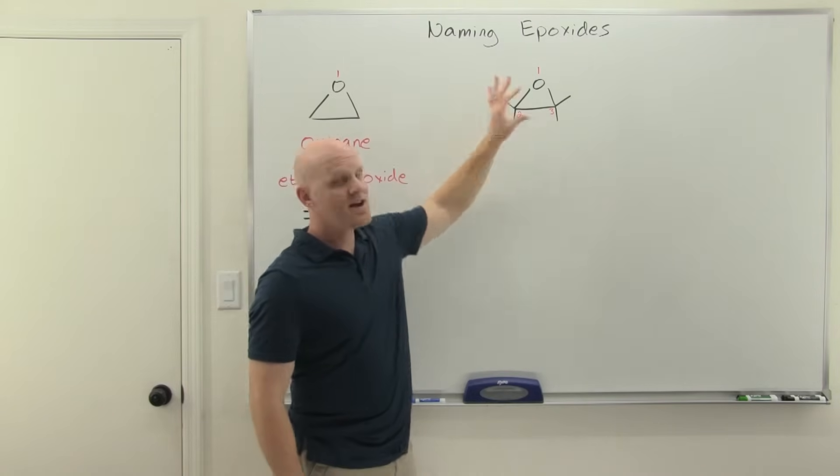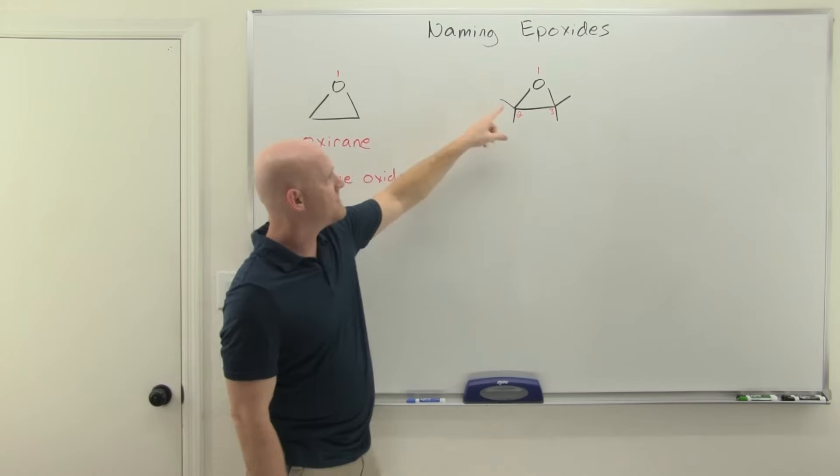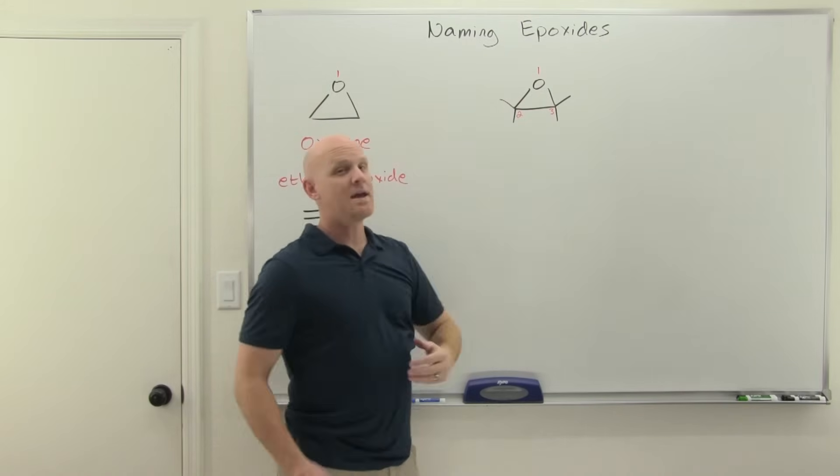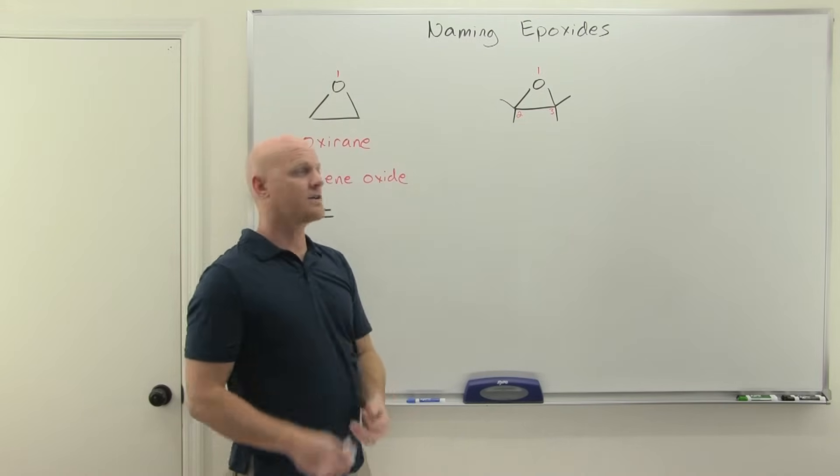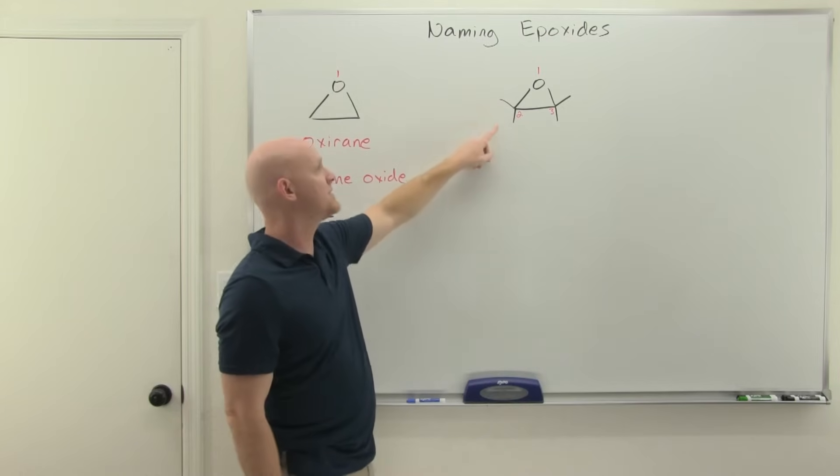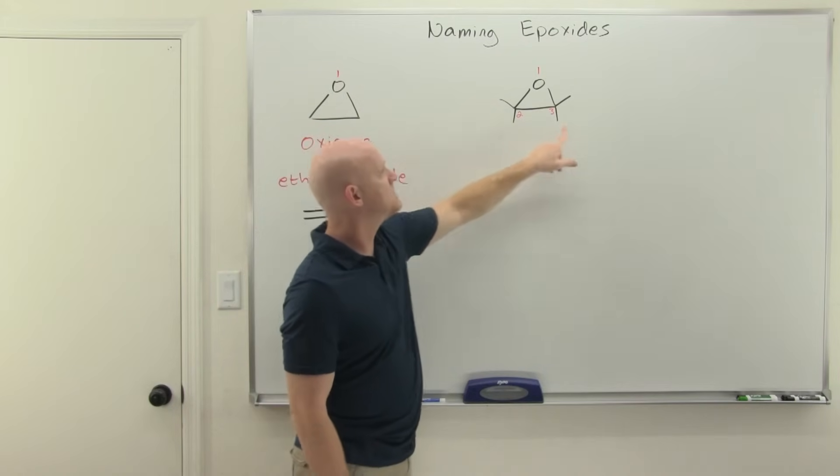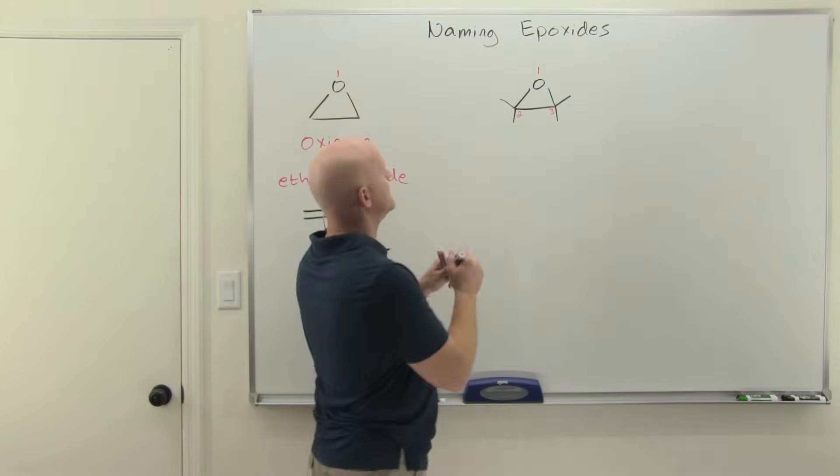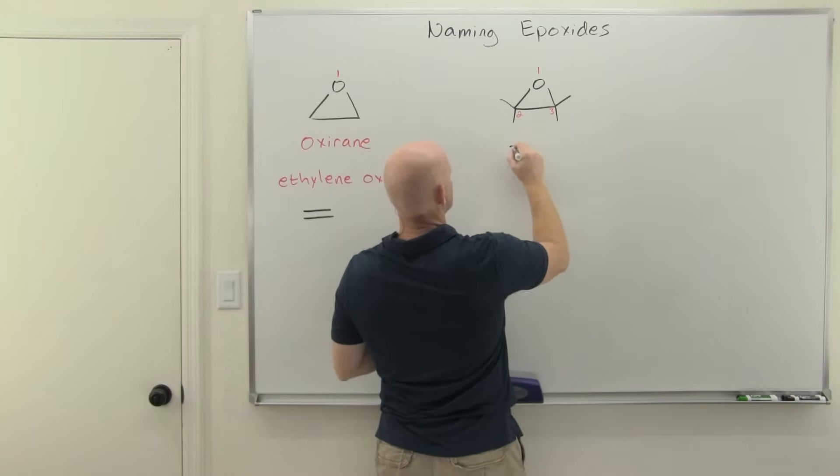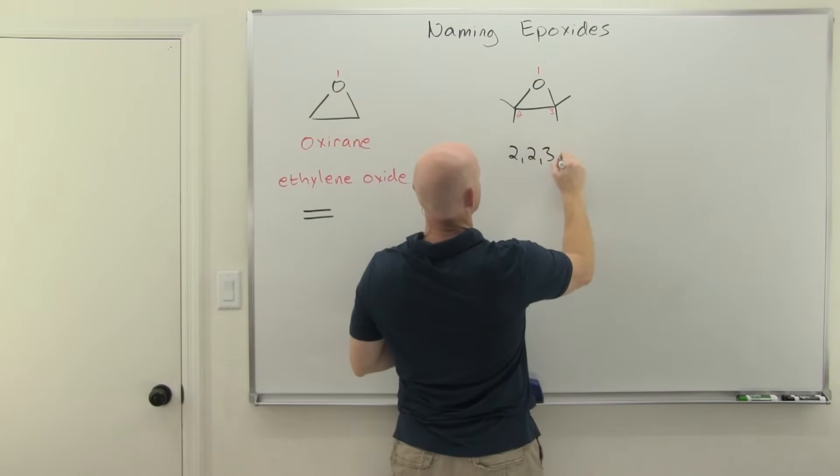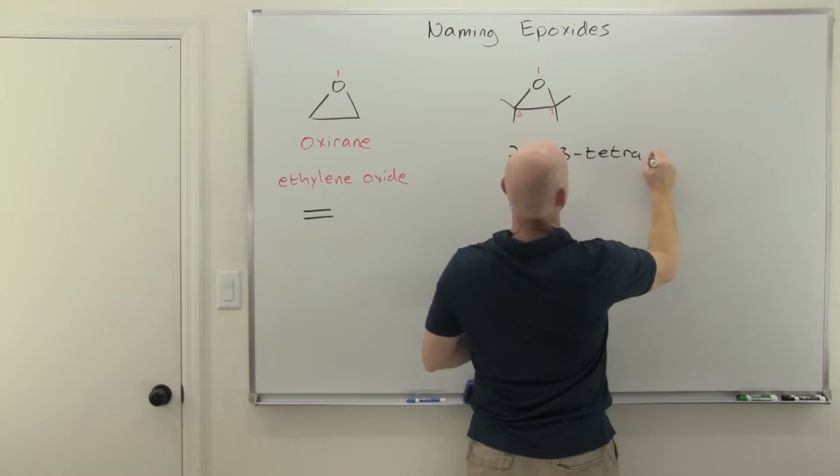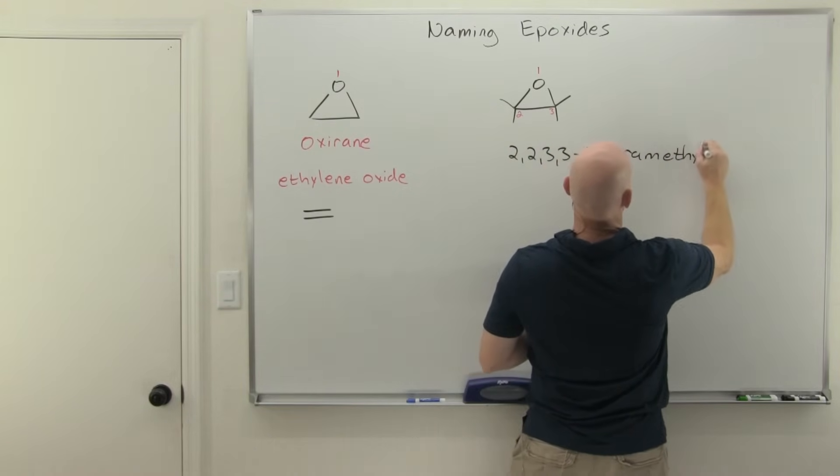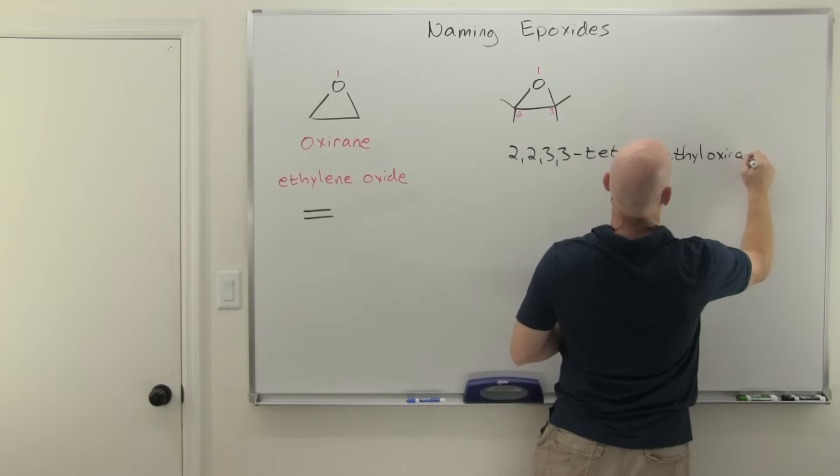So the parent chain here is going to be called oxerane. And then everything that's not part of this three-membered ring will be named as substituents coming off oxerane. In this case, I can see I've really got four methyl groups, two on carbon two and two on carbon three.